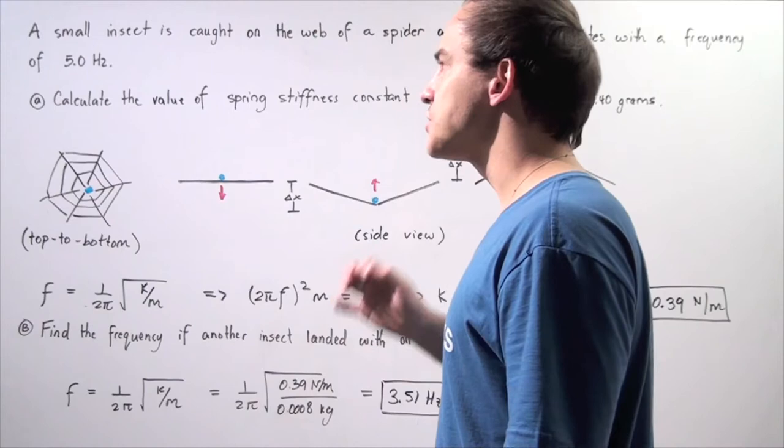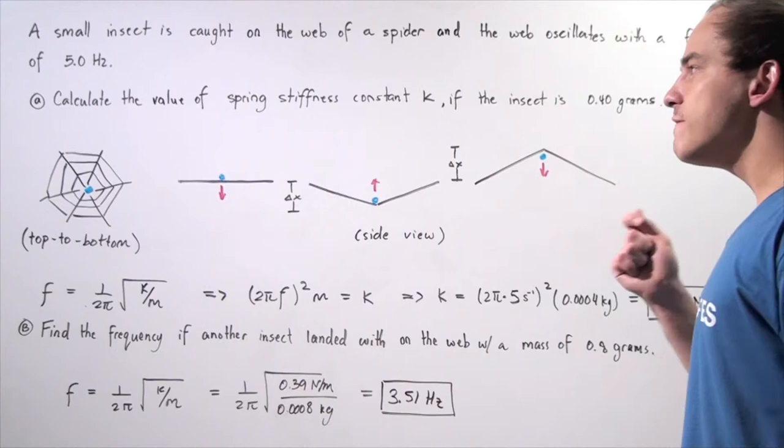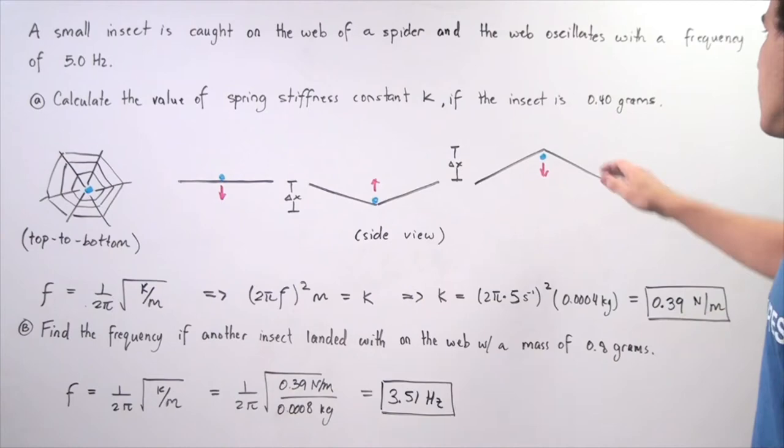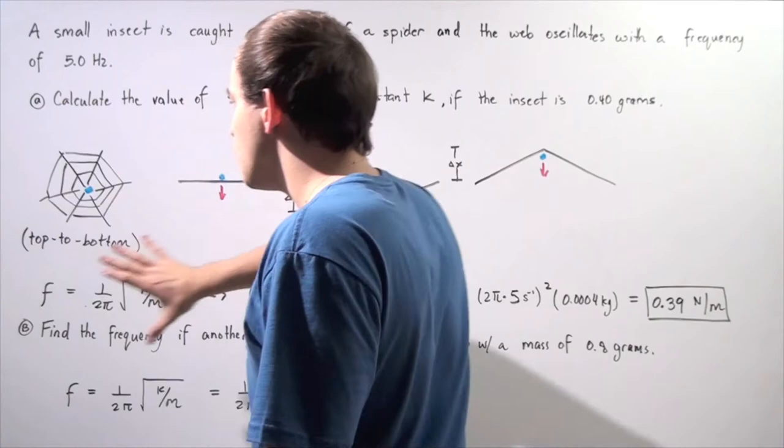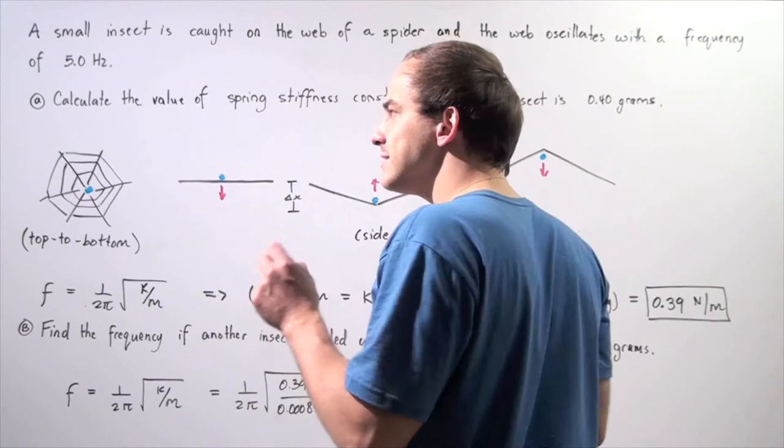So in part A we'd like to calculate the value of the spring stiffness constant k if the insect has a mass of 0.4 grams. So let's look at the top to bottom view of our spider web. It looks something like this. Let's suppose our insect is shown in blue.